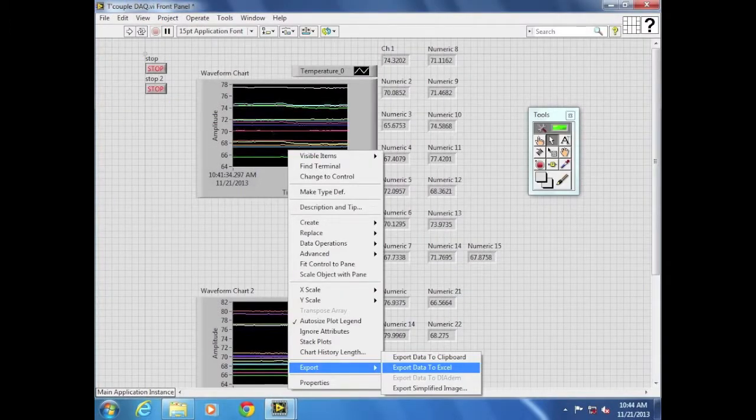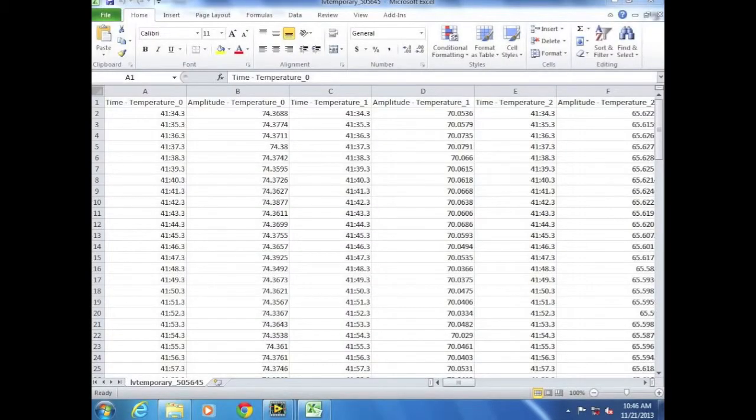To export the data acquired, right-click on the waveform chart and select Export. If collecting data from both modules, make sure to export the data from both waveform charts. Ensure that the file is saved as an Excel workbook file.